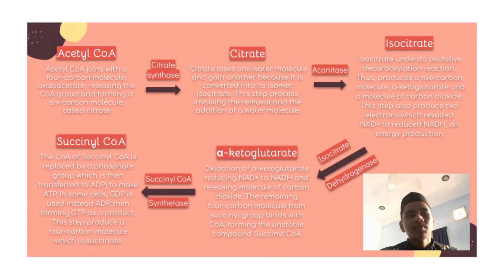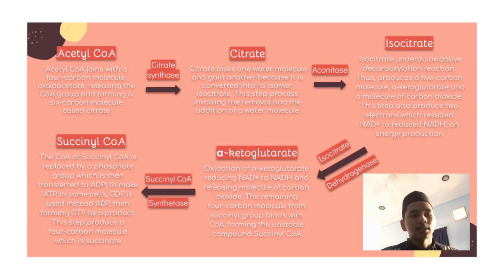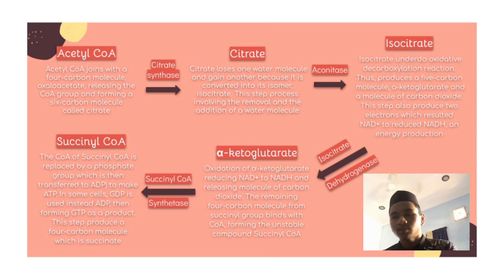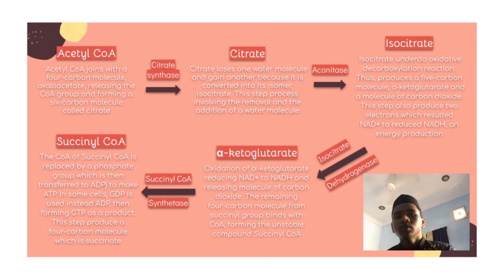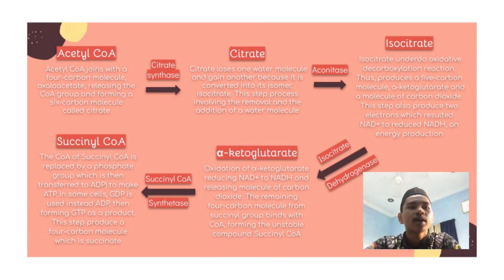The fourth step is similar to the third. This time it is alpha-ketoglutarate that is oxidized, reducing NAD+ to NADH and releasing a molecule of carbon dioxide. The remaining four-carbon fragment binds with coenzyme A, forming the unstable compound succinyl-CoA. The enzyme catalyzing this step is alpha-ketoglutarate dehydrogenase.